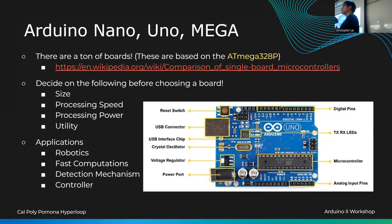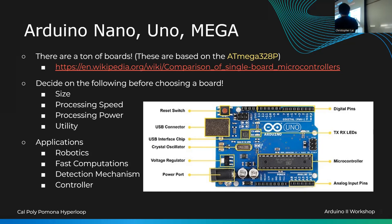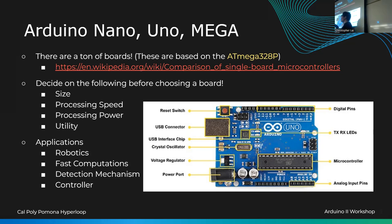These components are really useful compared to a bare microcontroller. For example, if you're powering the board with 9 volts — Arduinos typically run on 5 to 12 volts — the voltage regulator steps it down to a safe voltage. RX/TX LEDs are amazing for debugging: if you're daisy chaining Arduinos, these LEDs tell you whether your Arduino is receiving a signal from the other Arduino.